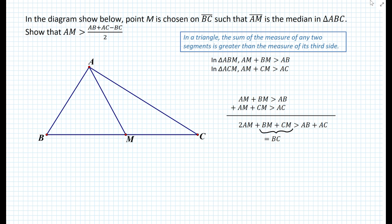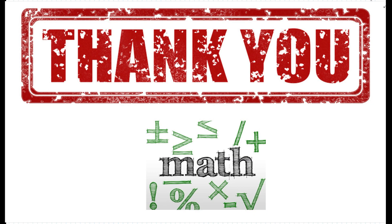Now we isolate AM. Subtracting BC from both sides gives 2AM is greater than AB plus AC minus BC. Dividing both sides by 2, we obtain that AM must be greater than (AB plus AC minus BC) divided by 2. We have therefore shown that this must always be true. That's it for today's lesson — thank you for watching and have a wonderful day.